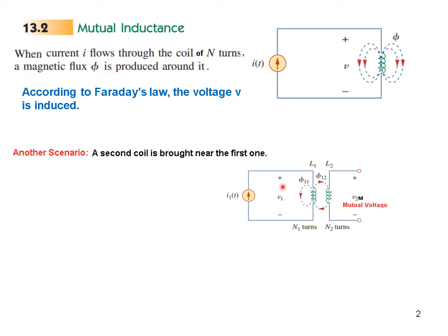Because of phi11, the voltage induced in the first coil will be V1 — the self-induced voltage. But there will also be a voltage induced in the second coil, and this is called the mutual induced voltage, because of the mutual inductance between the two coils.